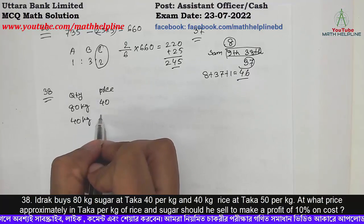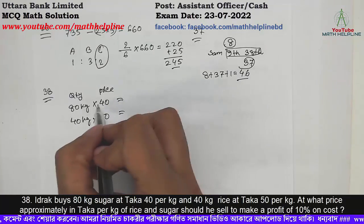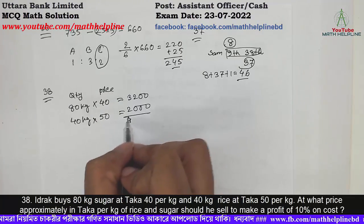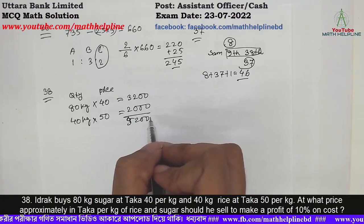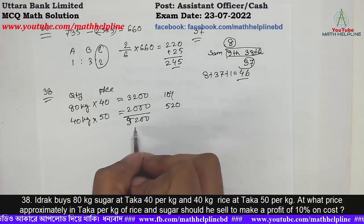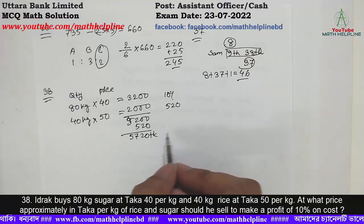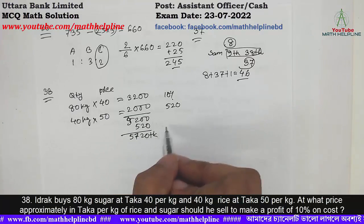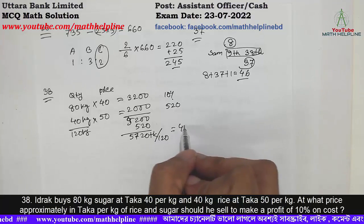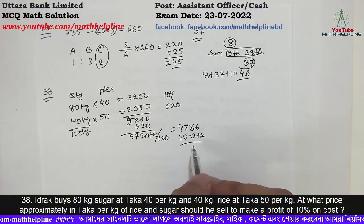Quantity: 40 kg at 50 taka. Total price calculation gives 4,32,000. House price 4,25,200. Total cost price: to make a 10% profit, the required profit is 520 taka. With 10% profit, the answer is 80% and 2% result.